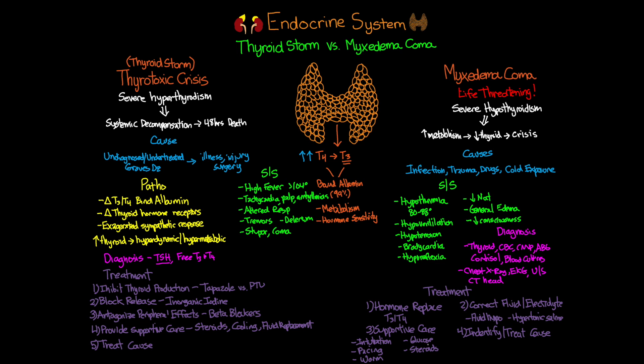That wraps up this lesson comparing thyroid storm and myxedema coma — two very different disorders on opposite ends of the spectrum, both relating to an imbalance of thyroid hormone. Hopefully this has made the differences clearer, including what to expect clinically and the treatment options available. While these aren't very common, it's important to have a solid foundation of knowledge in the event you encounter a patient in one of these crises.